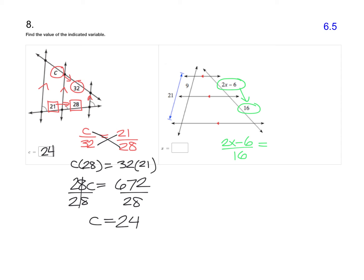But notice that our first transversal here doesn't give me the length of this piece right here. It gives me the total of 21. So that piece is just 21 minus 9. And 21 minus 9 is 12.